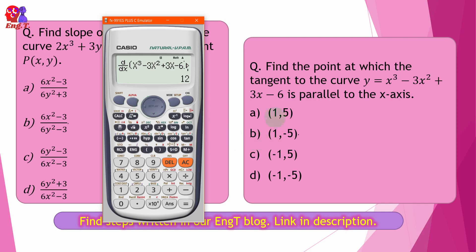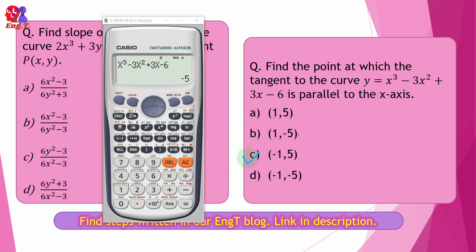This means at point x equals 1, the tangent is parallel to the x-axis. The x value is 1, and the function gives the y value. The next value is minus 5, and the correct answer is Option C.